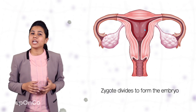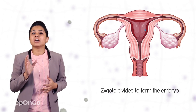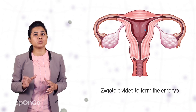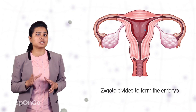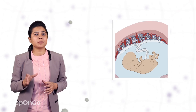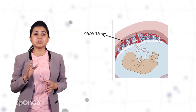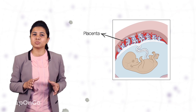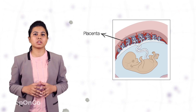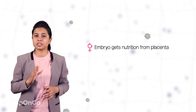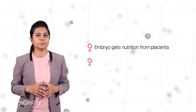The inner lining of the uterus thickens and is richly supplied with blood vessels so that it can nourish the growing embryo. After implantation of the zygote, a dish-shaped special tissue called placenta develops between the uterus wall and the embryo. The embryo gets all its nutrition from the mother's body through this placenta only.